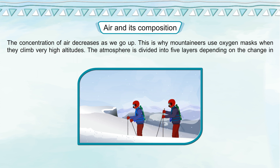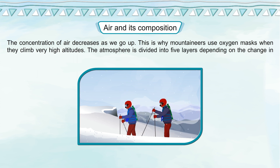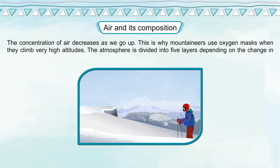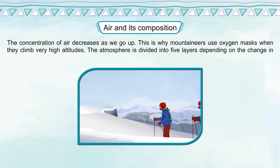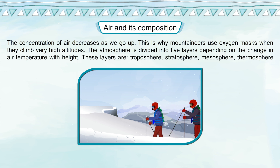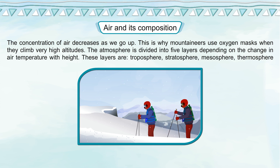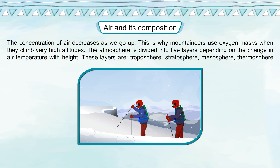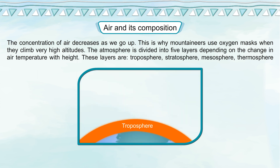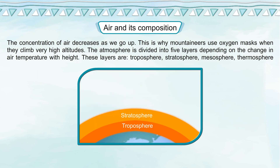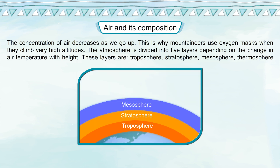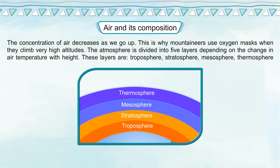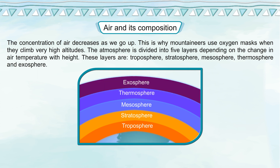This is why mountaineers use oxygen masks when they climb very high altitudes. The atmosphere is divided into 5 layers depending on the change in air temperature with height. These layers are troposphere, stratosphere, mesosphere, thermosphere and exosphere.